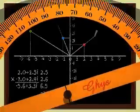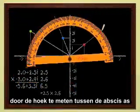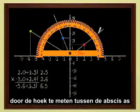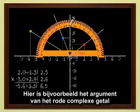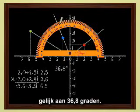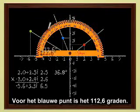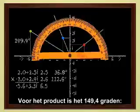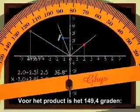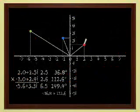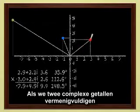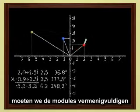The argument of a complex number is measured by the angle between the abscissa axis and the straight line joining the origin to the point. Here, for instance, the argument of the red complex number is 36.8 degrees. The argument of the blue point is 112.6 degrees. And for the product, the green point, we get 149.4 degrees. That is, the sum of the arguments of the two numbers. When we multiply two complex numbers, moduli are multiplied and arguments are added.